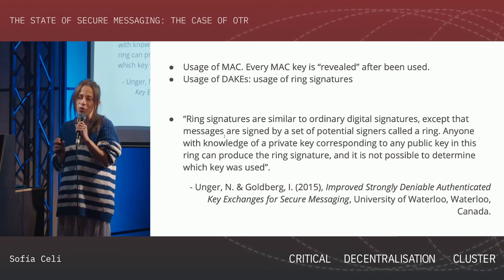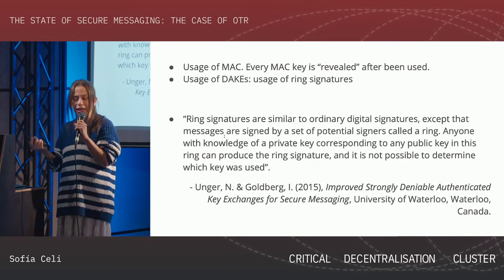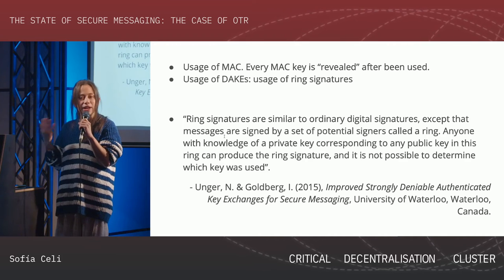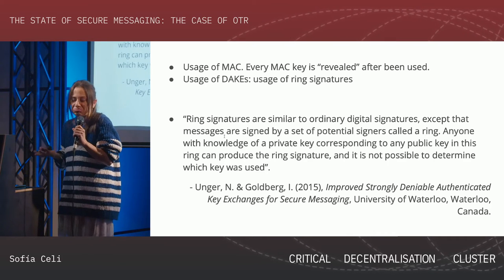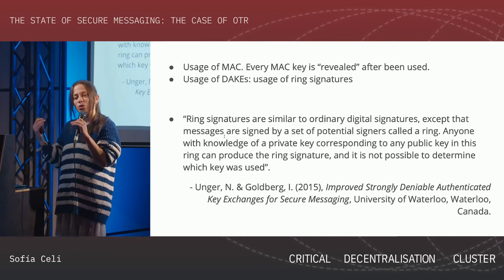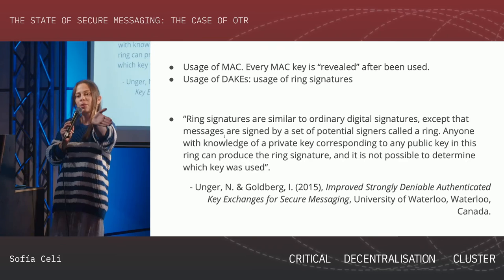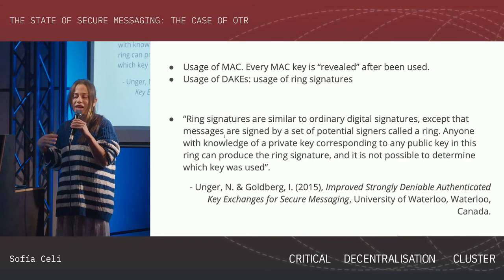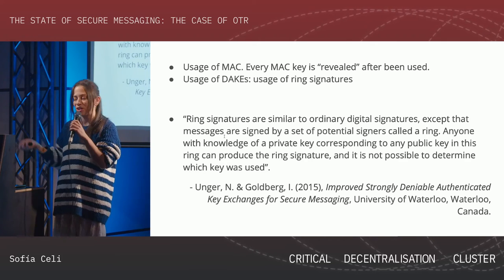How is this achieved technically? In the past, OTR and related protocols used a message authentication code instead of signatures. After the fact the conversation happened, you reveal the keys used to generate the MACs, and anyone could have taken those keys and created a conversation with them. Right now, online deniability is achieved using ring signatures during a phase called the deniable authenticated key exchange. The long-term keys are sent in this deniable phase, and ring signatures provide the deniability.